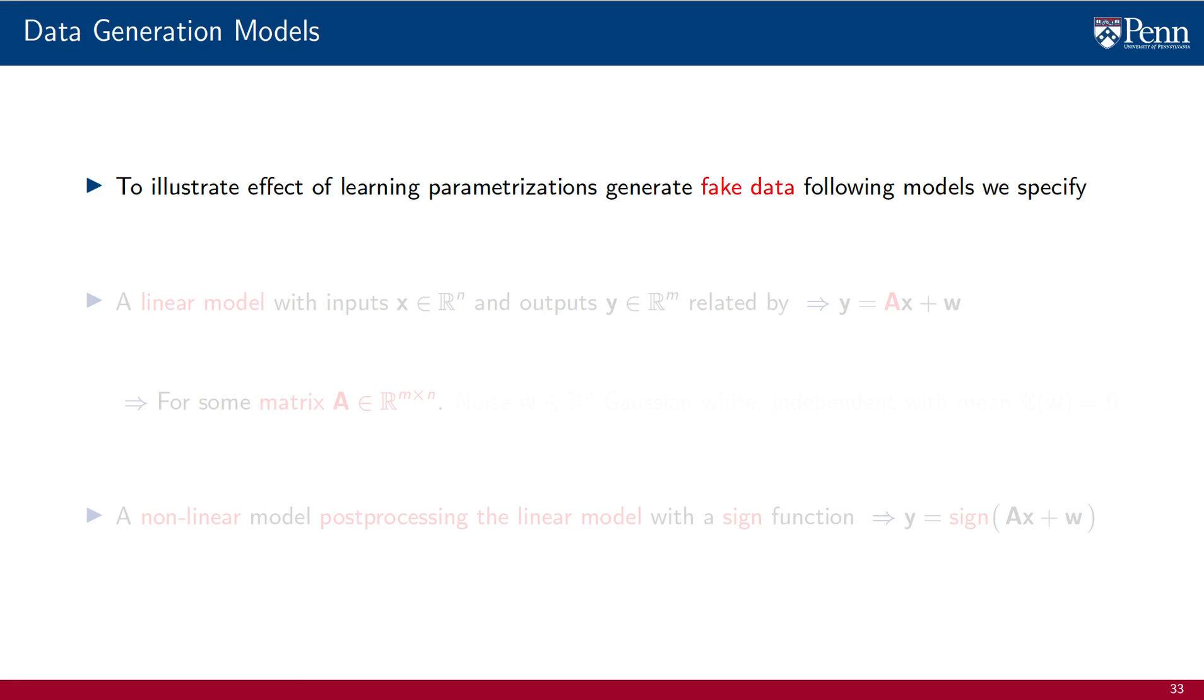Now in reality, data is gathered from nature. To illustrate the effect of learning parametrizations in AI, however, we will generate our own fake data that follows models that we specify. One of them is a linear model in which inputs x are related to outputs y according to a linear transformation, determined by a known matrix A of proper dimensions. We also add a white Gaussian noise term that is independent of the input x and has zero mean. The other is a non-linear model where we post-process this same linear transformation with a sine function.